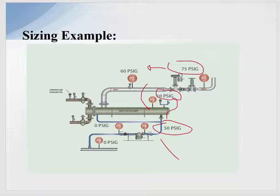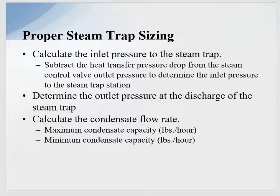That 50 PSI at P4 is significantly different than the 75 PSI inlet pressure — a 25 PSI difference that can have a significant impact on steam trap capacity. We need to calculate the inlet pressure to the steam trap by subtracting the heat transfer pressure drop from the control valve outlet pressure. Next, determine the outlet pressure at the discharge of the steam trap, and calculate the condensate flow rate — both maximum and minimum condensate capacity in pounds per hour.